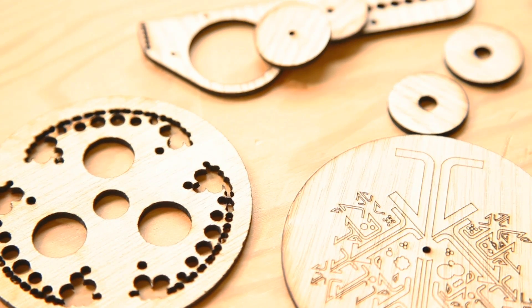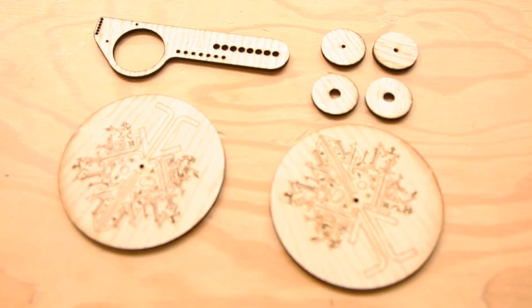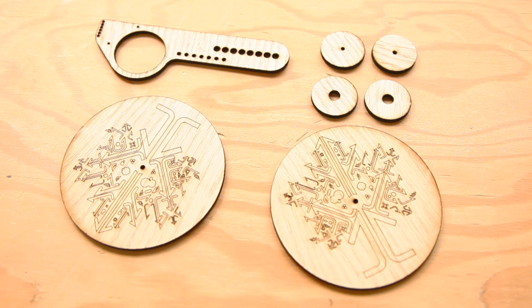There's a template on the project page that you can use to laser cut chariot parts. Or you can transfer the images to any strong, lightweight material and carefully cut them out by hand.